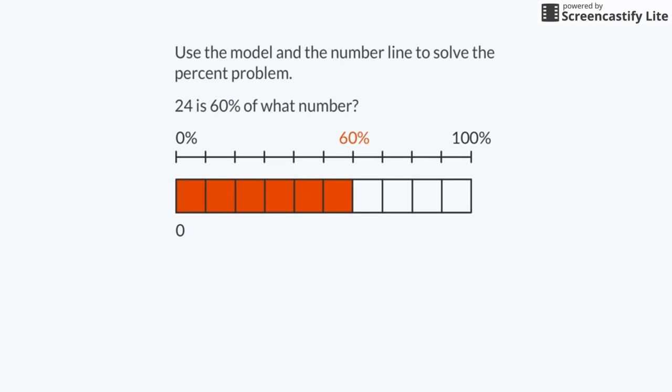Since 6 sections represents 24, I will divide 24 by 6. This shows me that each section represents 4 parts of the whole. There are 4 unshaded sections in the model. I can count from 24 by 4's to find the whole. I'll begin with the first unshaded section.